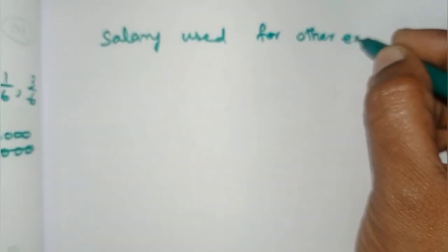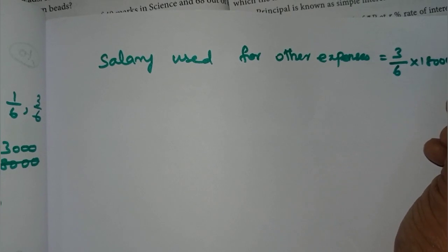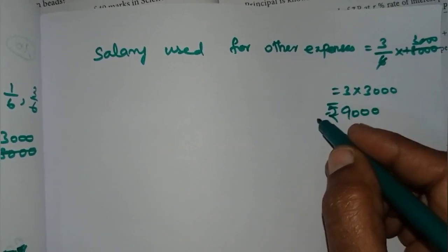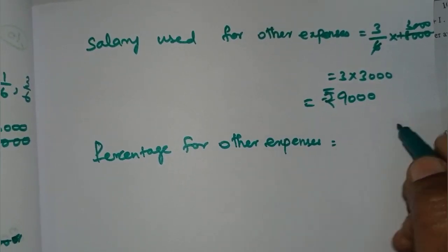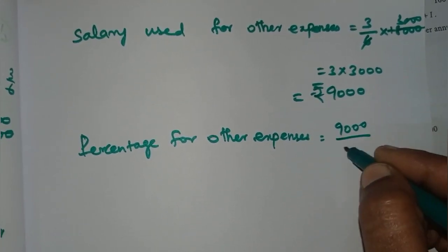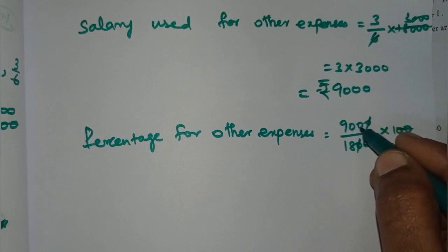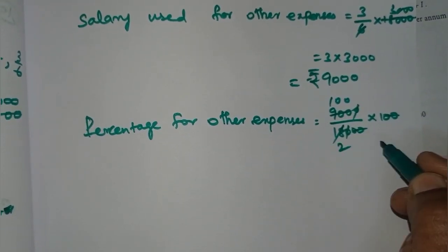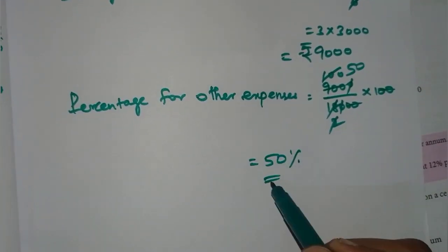Salary used for other expenses: 3 by 6 into 18,000 equals 9,000 rupees. Percentage for other expenses: 9,000 by 18,000 into 100%. Cancel zeros: 9 by 18 into 100 equals 50%. So percentage for other expenses is 50%.